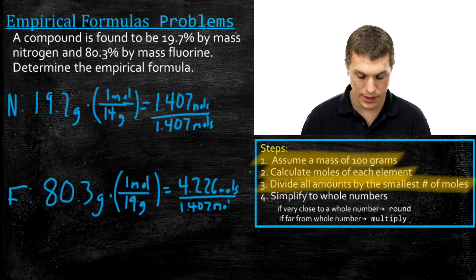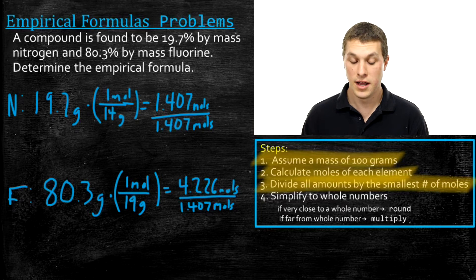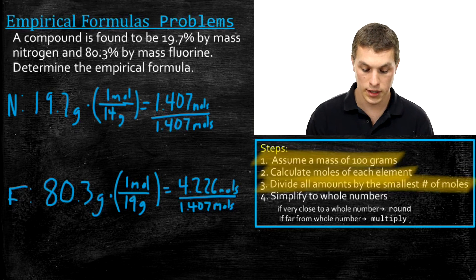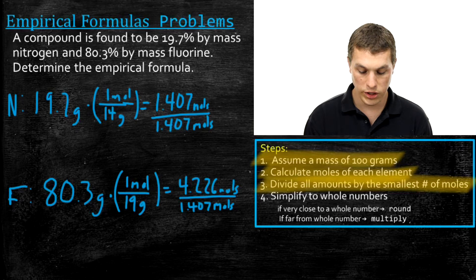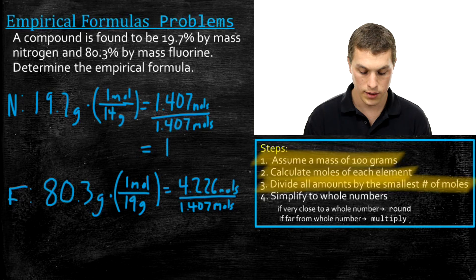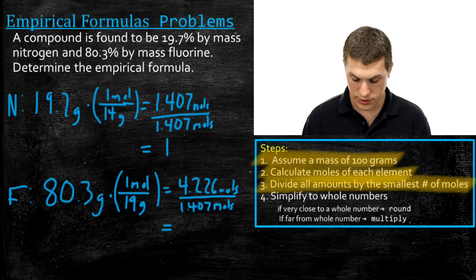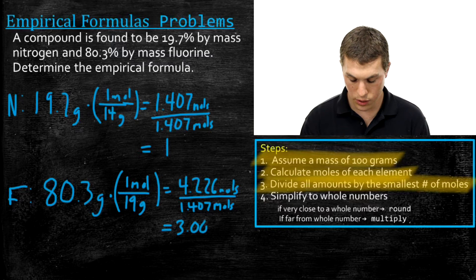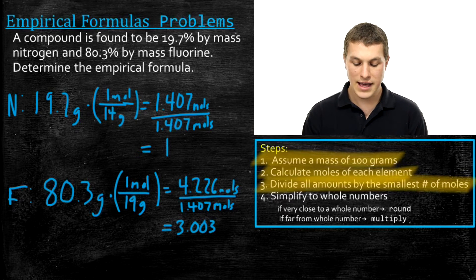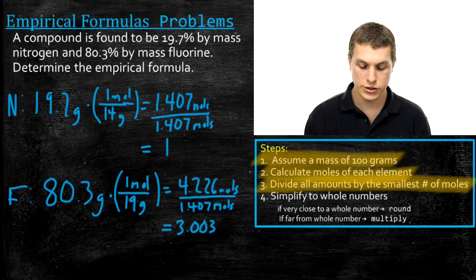Notice that we're dividing by moles in both cases, so the moles cancel and we're left with a unitless number representing the ratio of fluorine to nitrogen. For nitrogen: 1.407 divided by 1.407 equals 1. For fluorine: 4.226 divided by 1.407 gives us 3.003.